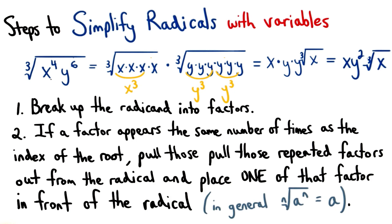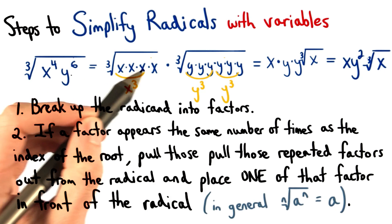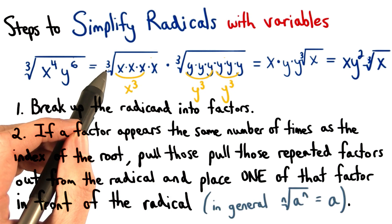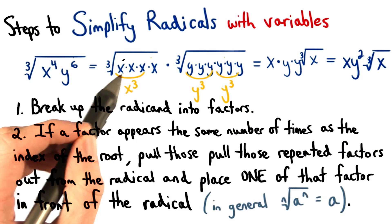So in order to simplify any radical, we want to take the radicand and split it up into its factors. If a factor appears the same number of times as the index of the root, then that means we can pull one of it out.